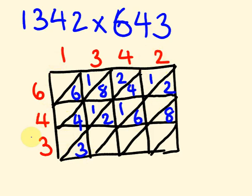Next one. 1 times 3 is 3. 3 times 3 is 9. 4 times 3 is 12. And 2 times 3 is 6.